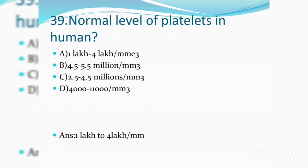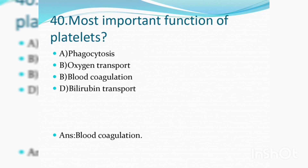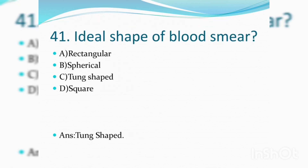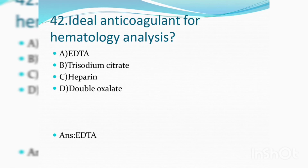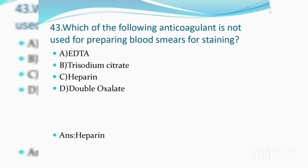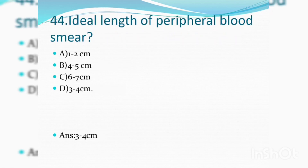Normal level of platelets in humans is 1 lakh to 4 lakhs per millimetre cube of blood. The most important function of platelets is blood coagulation. The ideal shape of a blood smear is tongue shape. The ideal anticoagulant for hematology analysis is EDTA. Which of the following anticoagulants is not used for preparing blood smears for staining? Answer: Heparin. The ideal length of a peripheral blood smear is 3 to 4 cm.